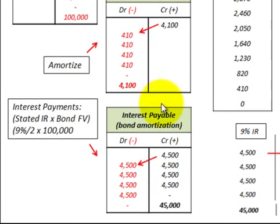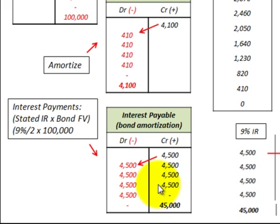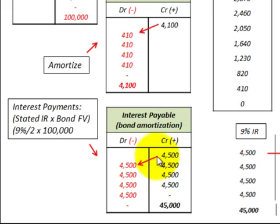Going down here, we have an interest payable account. That's based on the interest payments we make to our bondholders each period, based on the 9% stated rate — or 4.5% per period. So you take 4.5% times the $100,000 face value and you get a $4,500 payment each period to the bondholders for the interest due on that bond.